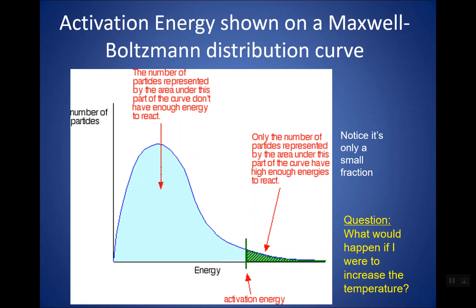So when you have collisions between your reactants, not every one of them is going to have enough kinetic energy to meet the activation energy. A large number of them will not. If we plot activation energy on this curve, you can see that only a small fraction of molecules might be able to overcome it and have enough energy to actually form products.